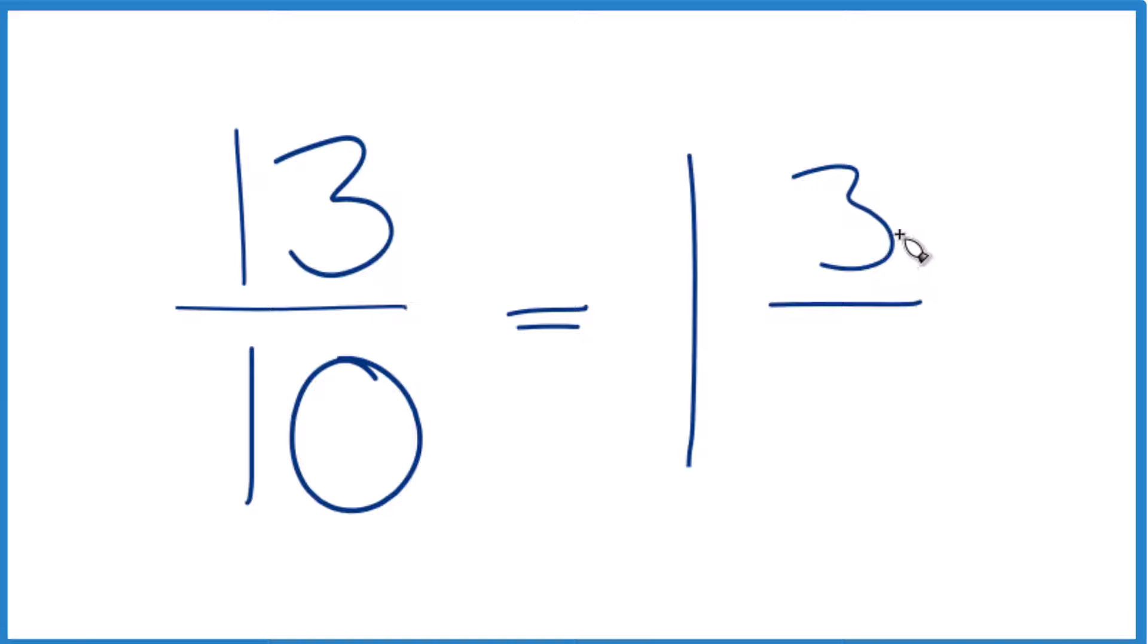So the 3 becomes the numerator. We just keep the 10 the same here as our denominator. So the improper fraction 13 tenths equals the mixed number 1 and 3 tenths.